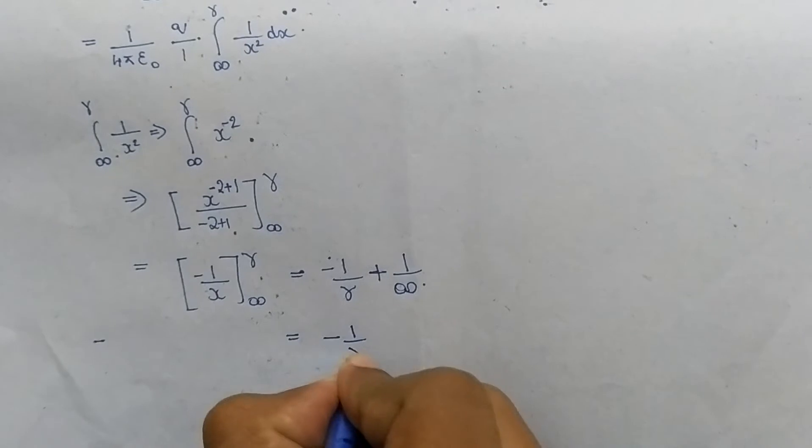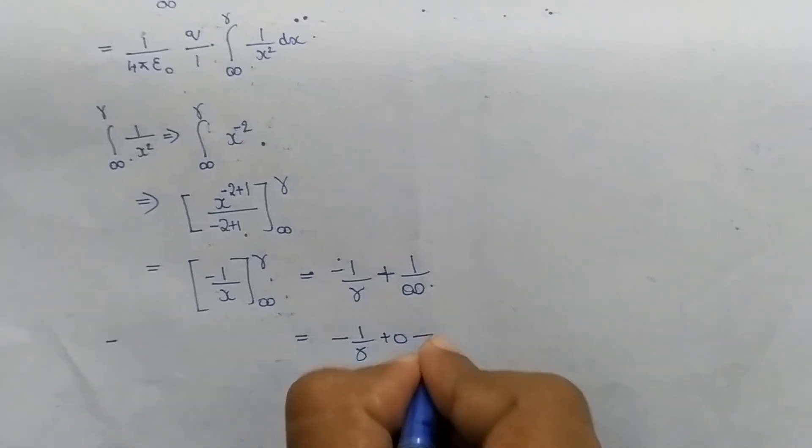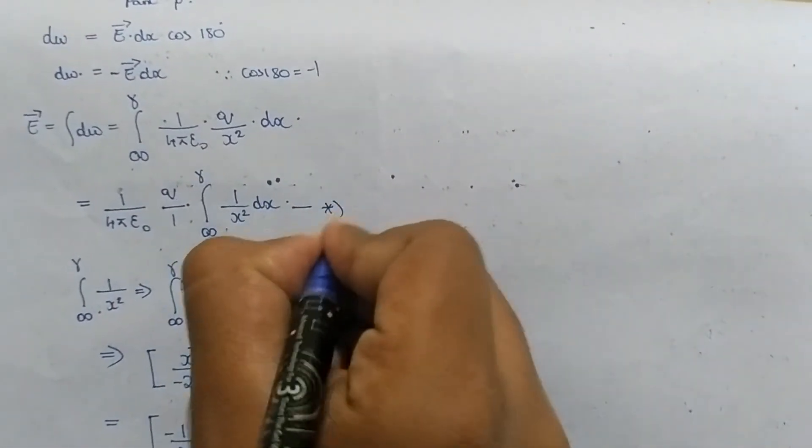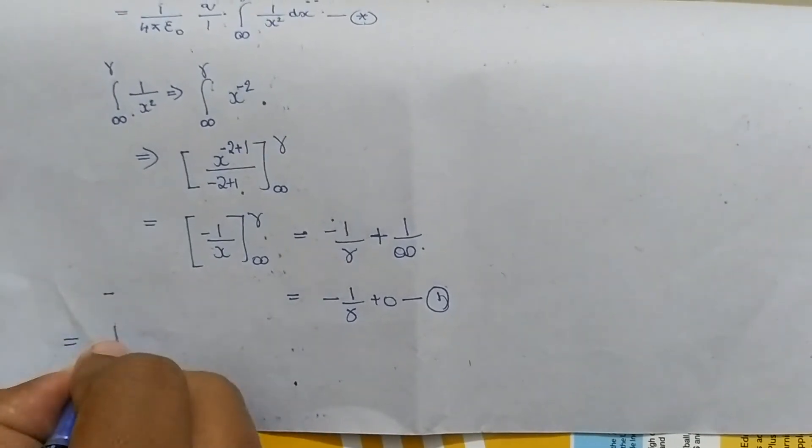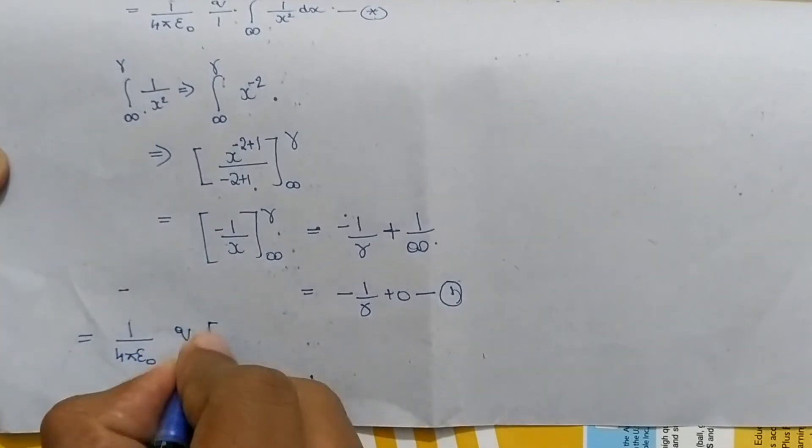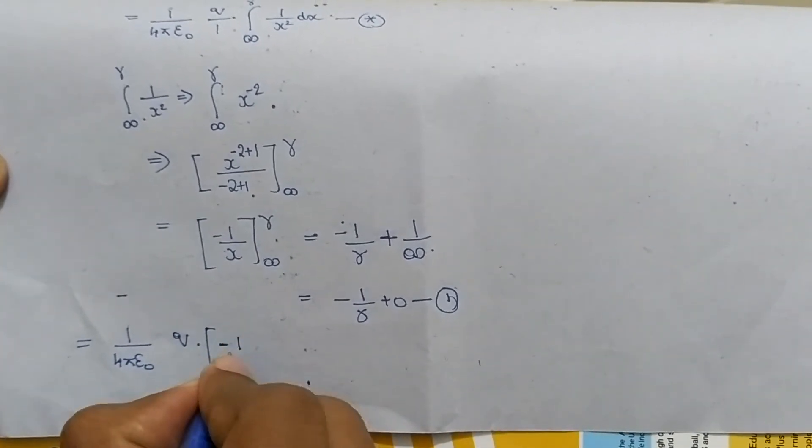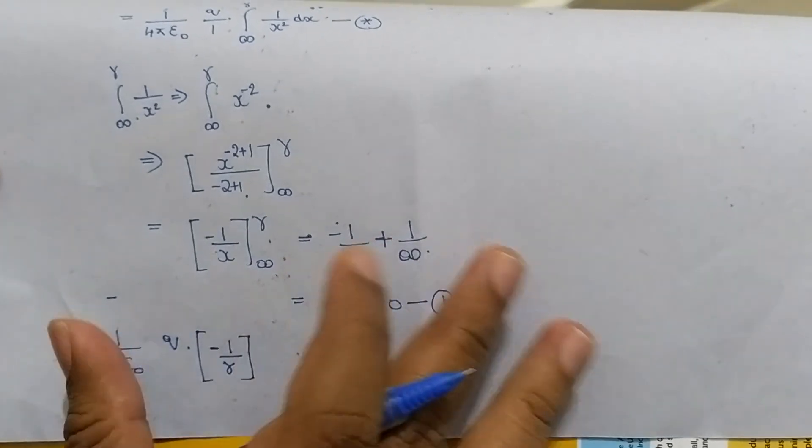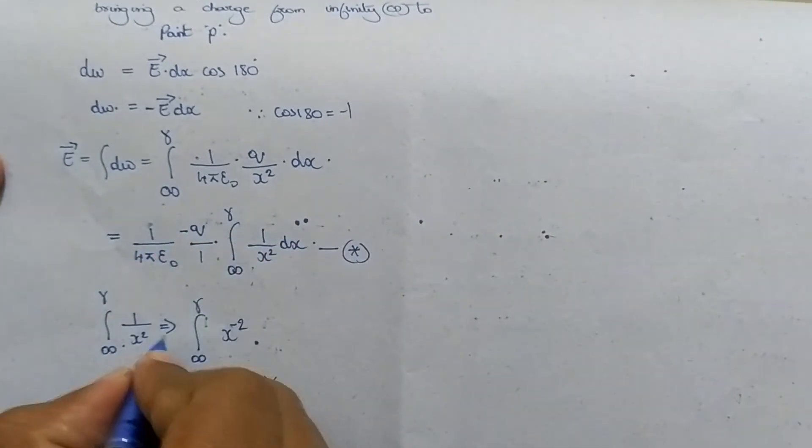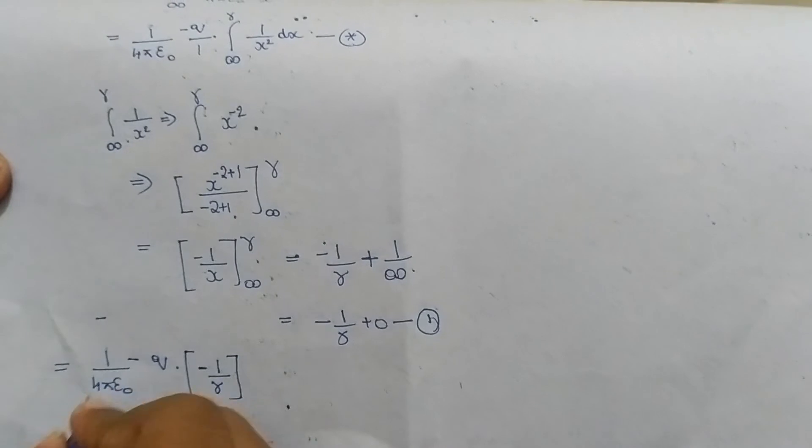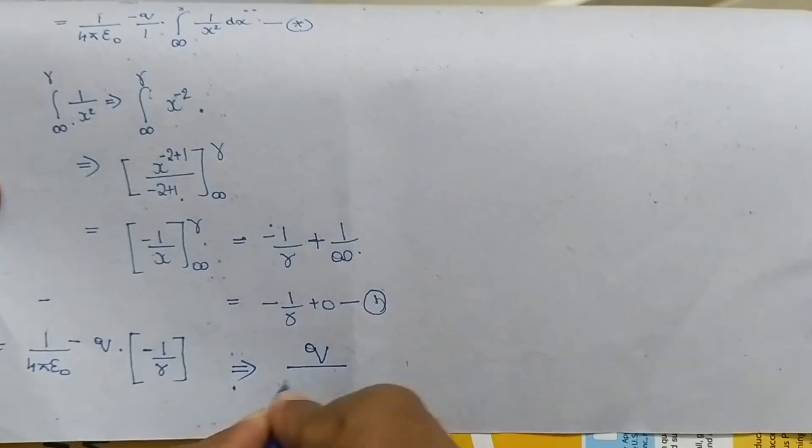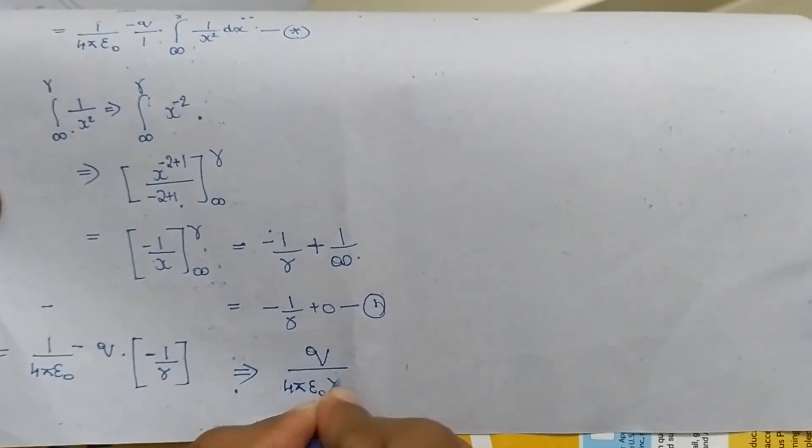Substituting this in this equation we get 1 by 4πε₀ Q into -1/r. Because of cos 180° we had -1 here, which reduces to Q by 4πε₀ by r.